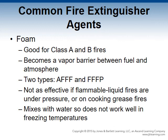Foam is a good agent for Class A fires and an even better agent for Class B fires, because it creates a vapor barrier between the fuel and the atmosphere, suffocating the fire by preventing oxygen from mixing with the fuel. To make foam, the agent is discharged through a special aspirating nozzle to mix with air. There are two types: AFFF (aqueous film-forming foam) and FFFP (film-forming fluoroprotein). NFPA 10 states foams are not as effective on flammable liquid fires under pressure or on cooking grease fires. Foam mixes with water, so it does not work well in freezing temperatures.